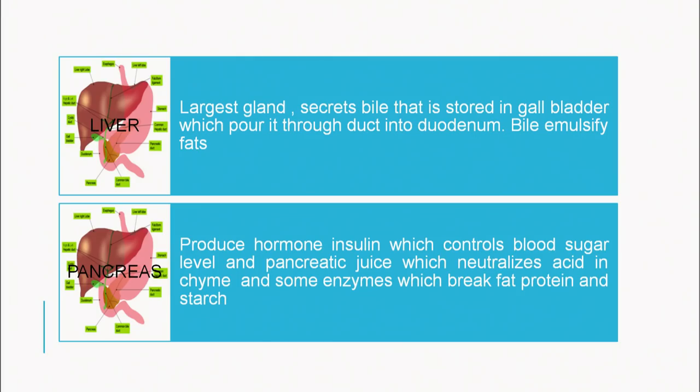Then the pancreas — present near the stomach. The pancreas produces the hormone insulin, which controls blood sugar level. Pancreatic juice is also secreted by the pancreas and neutralizes acid in chyme. Enzymes which break down fat, protein and starches are also produced in the pancreas, and they are all moved to the duodenum through the hepatopancreatic duct — a common duct for both the liver and the pancreas.